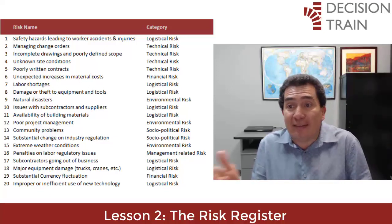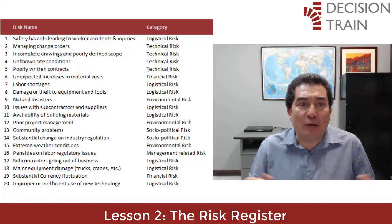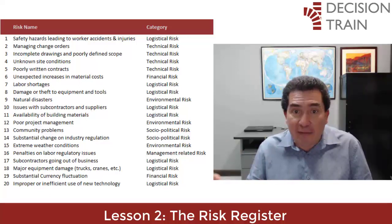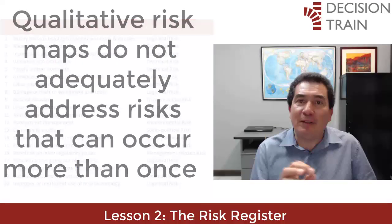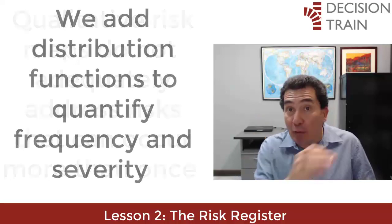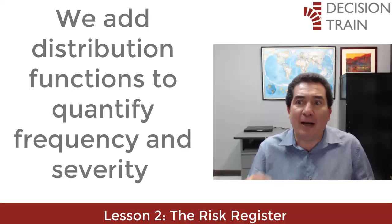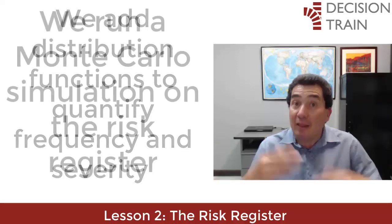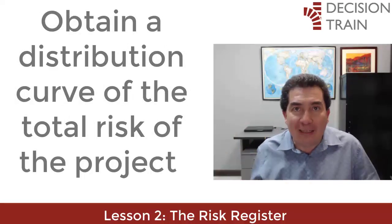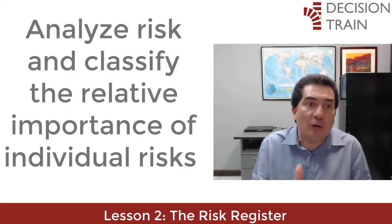Certainly, by the time this list of risks has been created with quality and consistency, many hours and teamwork have passed to agree that these 20 risks adequately represent a comprehensive list. We also assume that the quantification information has been carefully developed. A specific criticism of qualitative risk maps is that they do not adequately address risks that can occur more than once. When we add a probability distribution function to correctly quantify the frequency, we correct for this weakness. We also add distribution functions to quantify the severity or impact of each risk, which allows us to run a Monte Carlo simulation on the risk register and obtain a distribution curve of the total risk of the project. We can then analyze the comprehensive risk of the project and correctly classify the relative importance of each individual risk.